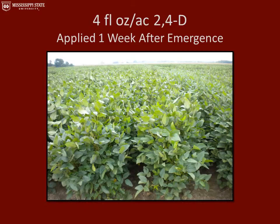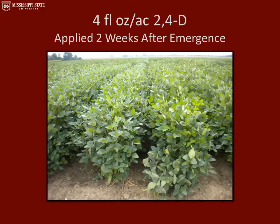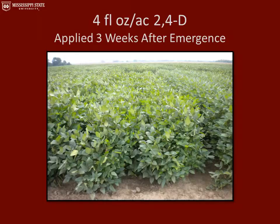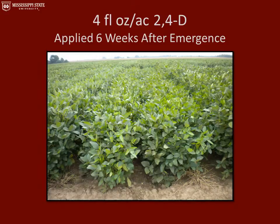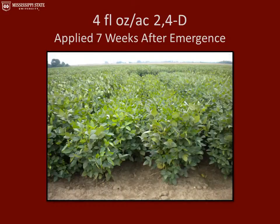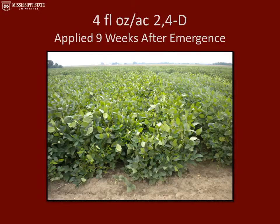I'm going to click through these pictures rather quickly. Keep in mind that all these treatments received the same application rate — the only difference is application timing. We used four-row plots and treated only the two center rows. This is four fluid ounces per acre of 2,4-D applied at one, two, three, four, five, six, seven, eight, and nine weeks after plant emergence. After nine weeks, we saw no significant visual injury, height reductions, or yield reductions, so I won't show those pictures for time's sake.